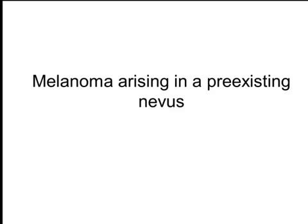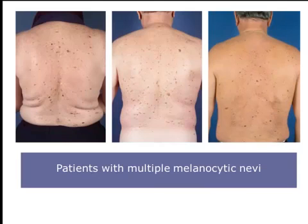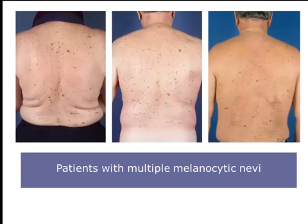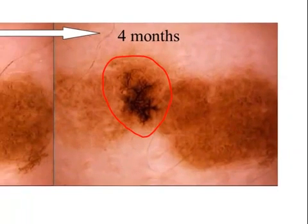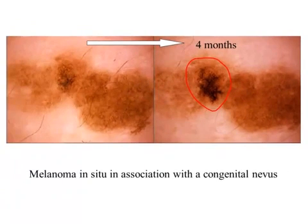What about melanoma arising in a pre-existing nevus? As I mentioned in the first broadcast of this series, patients with multiple nevi have an increased risk to develop melanoma, but usually when a melanoma develops it appears de novo and not in the pre-existing nevus. Here is an example: a melanoma in situ developing in a pre-existing nevus. The dark reticular pattern in the center of this lesion is changing, although the other part corresponding to the congenital nevus is not changing at all.